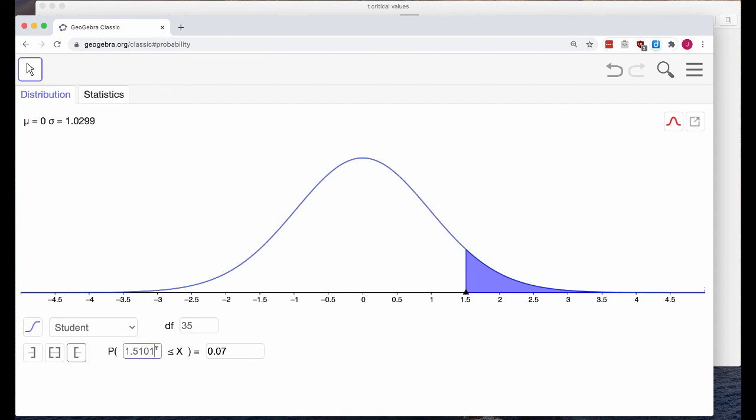So our critical value for this confidence interval is 1.5101. So go out 1.5-ish standard deviations from the mean, and then you will capture, on either side, you'll capture 86% of the area under that curve. So there you go. We have calculated two t-critical values for confidence intervals.